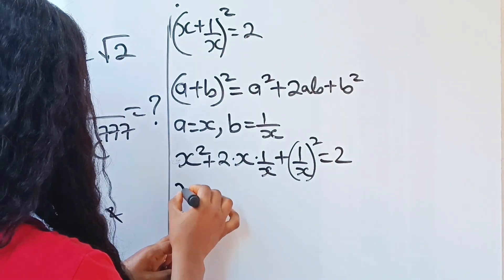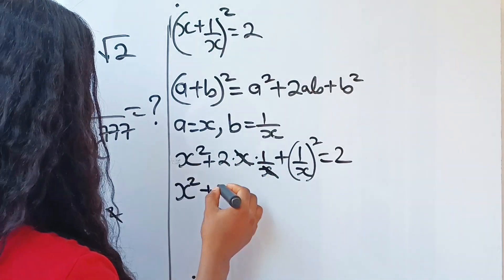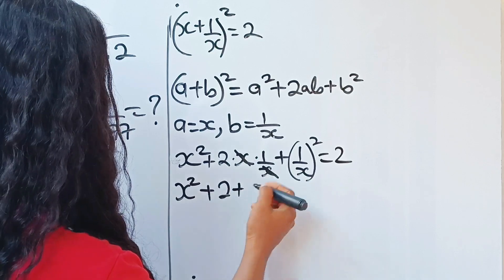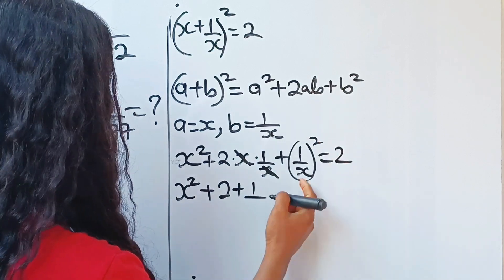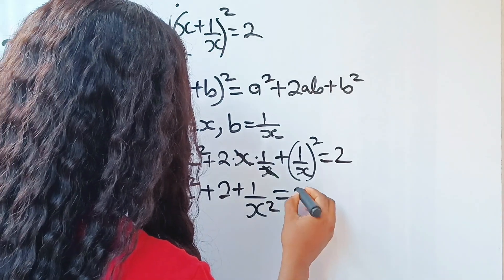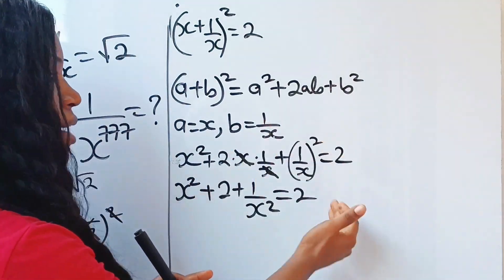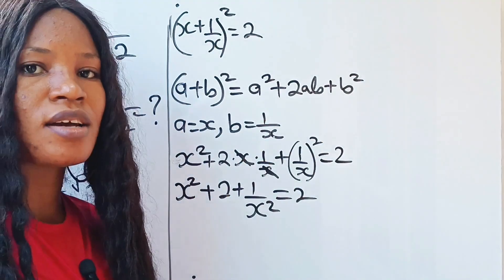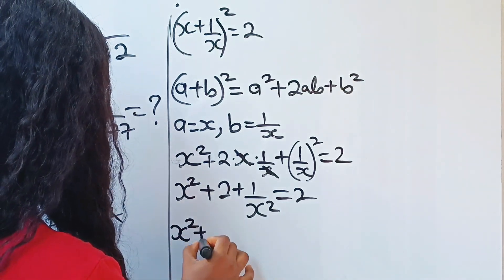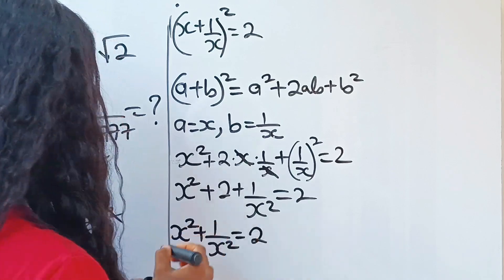We have x² plus — the middle term 2 times x times 1/x simplifies since x divides out, leaving just 2 — plus 1/x² equals 2. So we get x² + 2 + 1/x² = 2. Let's transfer the 2 to the right-hand side, giving x² + 1/x² = 2 − 2.